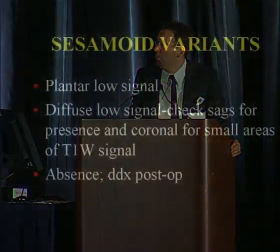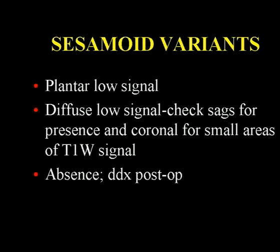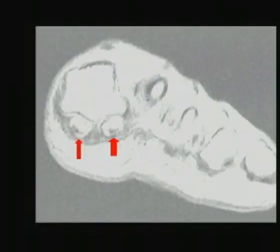Like everything in radiology, there are normal variants. The most important normal variant is low signal within the sesamoid. This can be diffuse but is usually epicentered at the plantar aspect. If you volume-average through this, it can make you think there's AVN or sesamoiditis, when it really is a normal variant — likely chronic stress changes with thickening of the cortex.